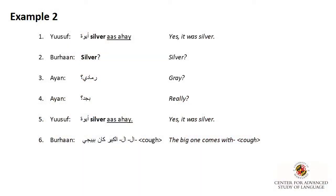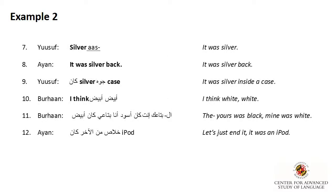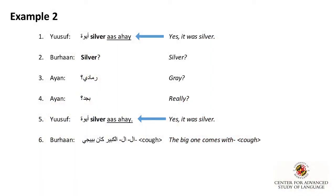Let's take a look at another example. This time, our speakers are discussing the color of an iPod. Youssef is certain that the iPod in question was silver, repeating the phrase yes, it was silver, mixing Arabic, Somali, and English in lines one and five, and partially again in line seven.